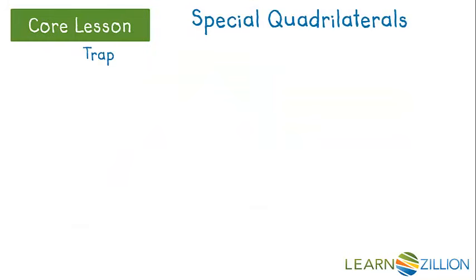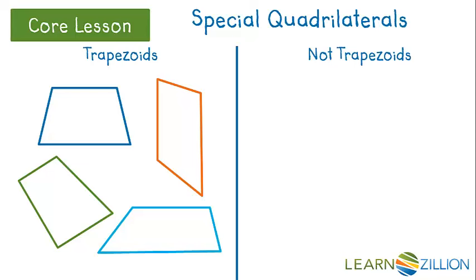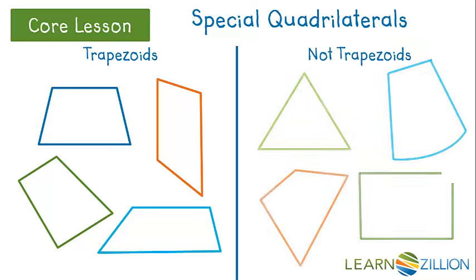Let's take a look at trapezoids. I am going to put two types of shapes up. The shapes on the left are all examples of trapezoids; the shapes on the right are not. Let's see if we can identify which attributes the shapes have in common so that we can make a rule for trapezoids. I am going to look at this shape with a curved bottom. None of the trapezoids have any curved sides, so a trapezoid must be a polygon — a shape with only straight sides.